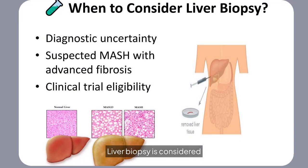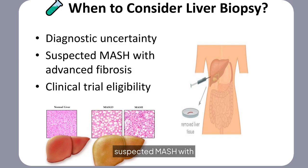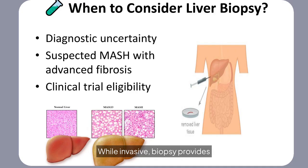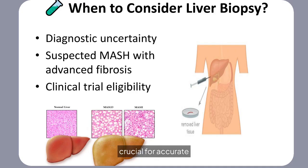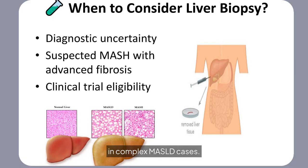Liver biopsy is considered when there's diagnostic uncertainty, suspected MASH with advanced fibrosis, or for clinical trial eligibility. While invasive, biopsy provides definitive histological evidence, crucial for accurate diagnosis and treatment planning in complex MASLD cases.